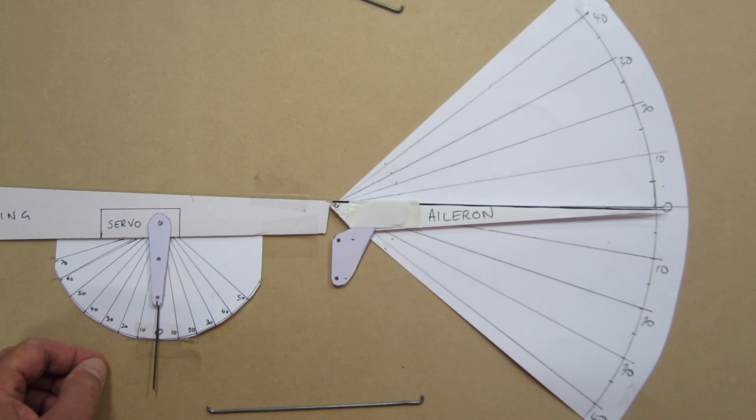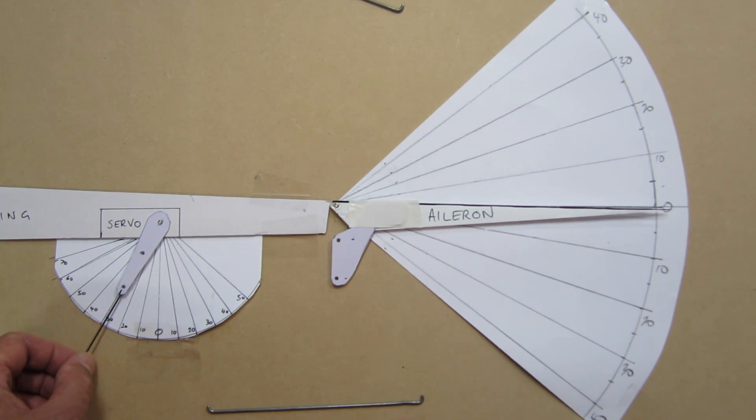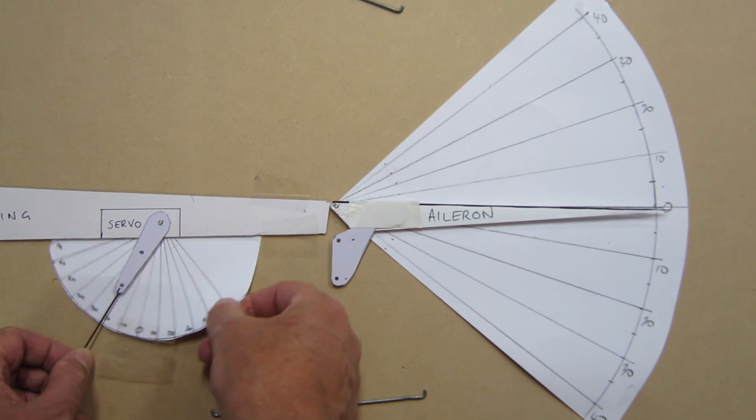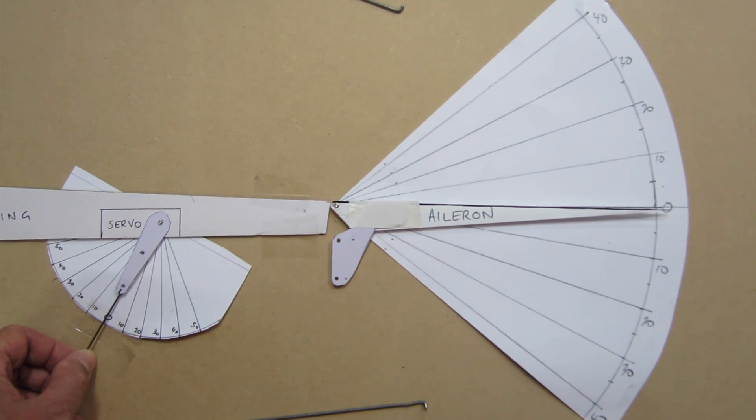Okay, so now I'm going to angle the servo arm forward, say 30 degrees, and I'll re-centre my gauge. There we go. I need a longer push rod.